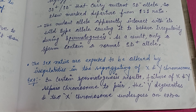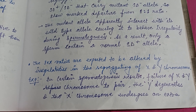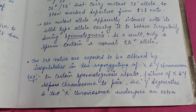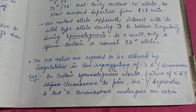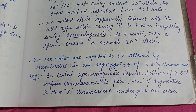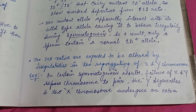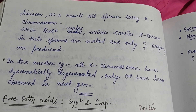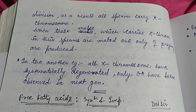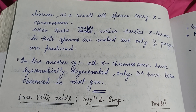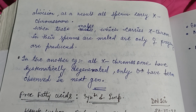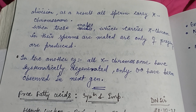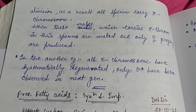Another example is the failure of X and Y chromosomes to pair. In this case, the Y degenerates and the X chromosome undergoes an extra division. As a result, only X chromosomes are present in the sperm.